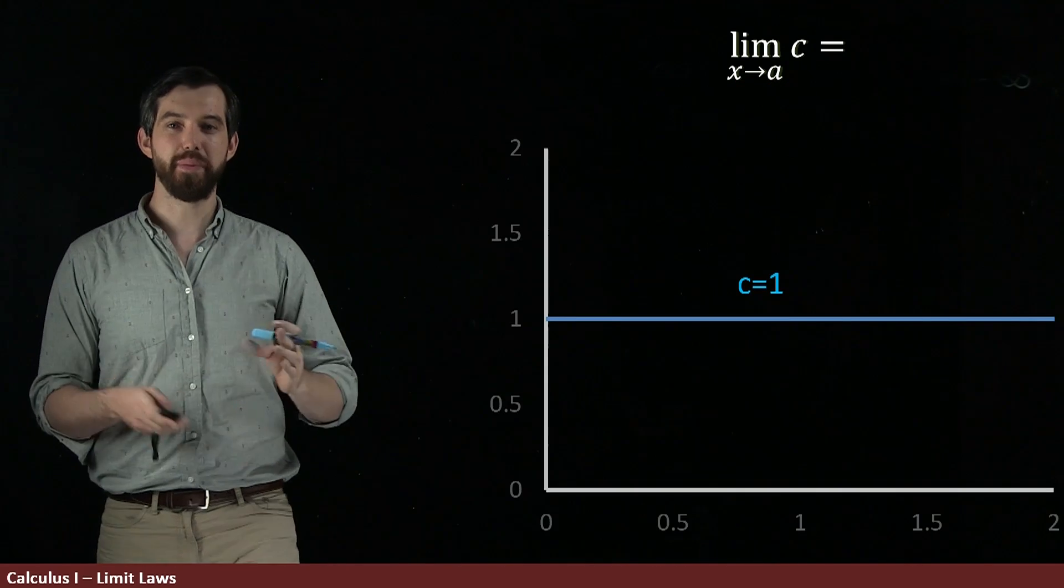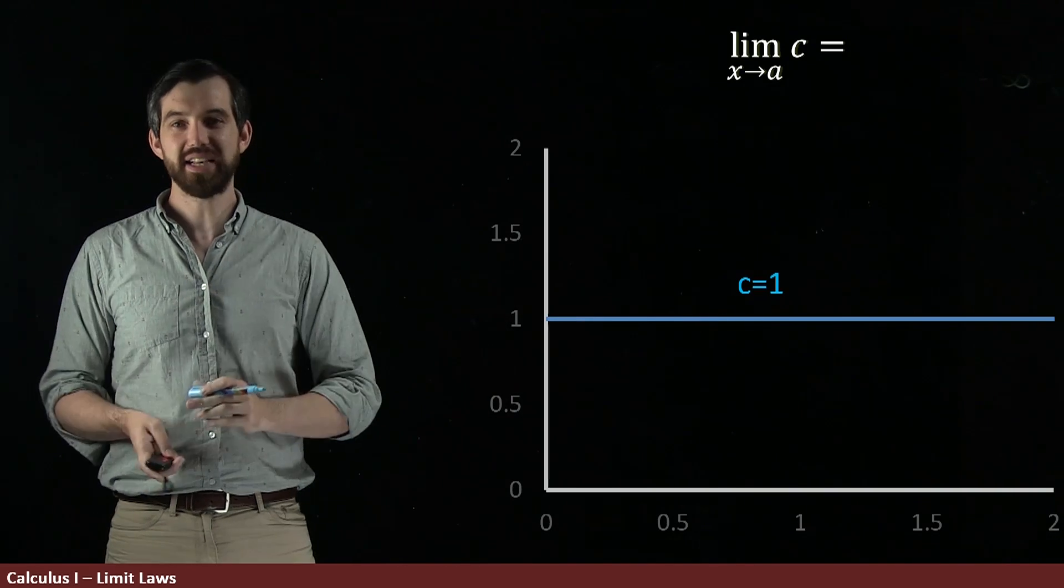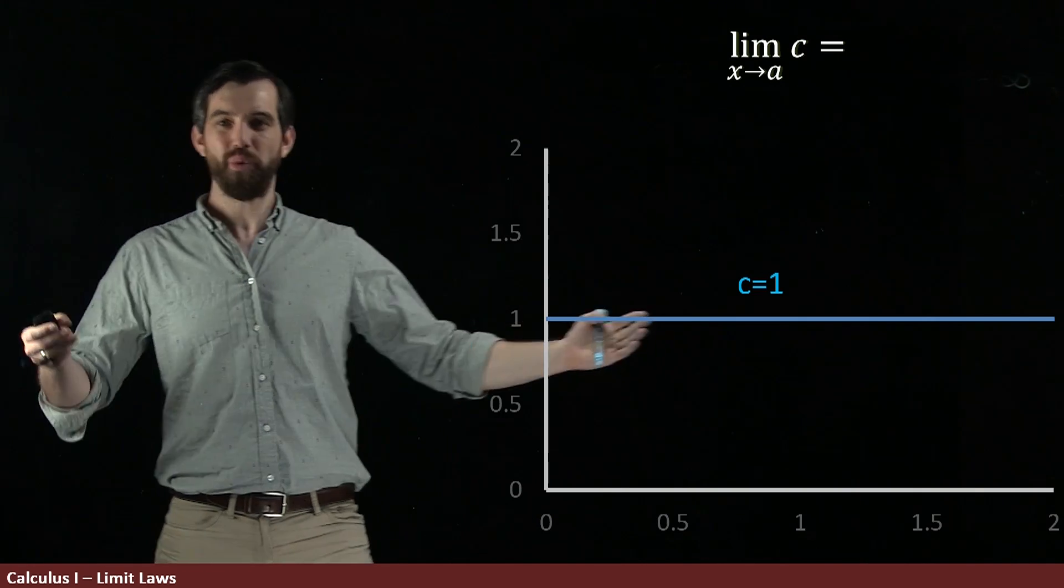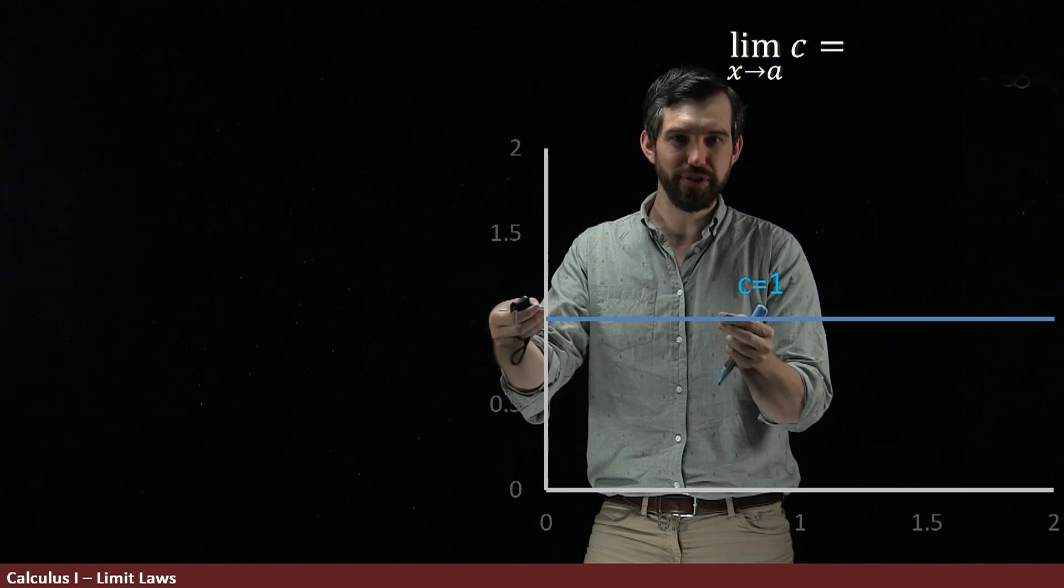So, for example, I'm going to bring up a graph here. This is the choice where my constant was 1. What is the limit of 1 as x goes to a? Well, it doesn't matter where I am on here. If I want to talk about this point right here, the limit as you get close to this point is 1.